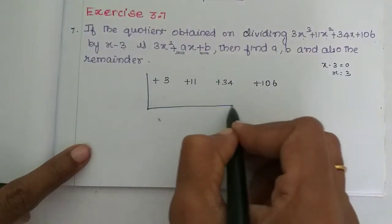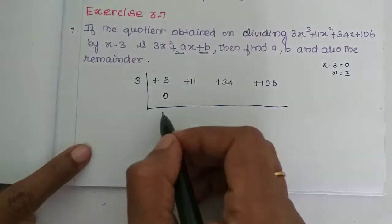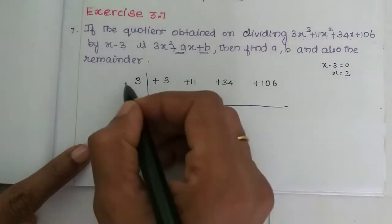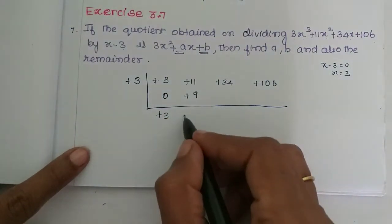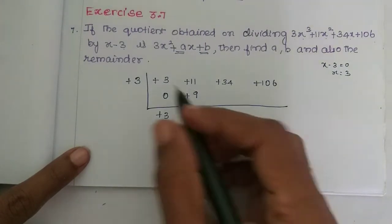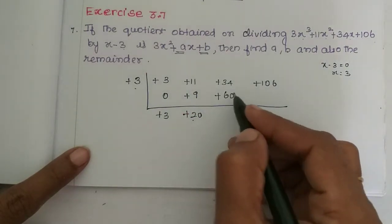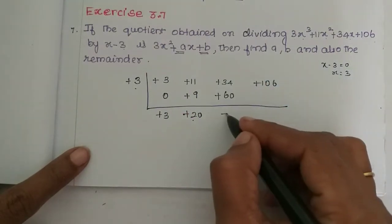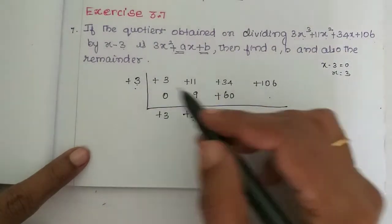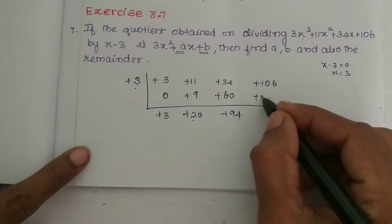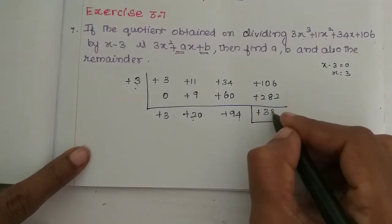Performing the synthetic division: bring down 3. Then 3 into 3 is 9. So 11 plus 9 equals 20. Then 3 into 20 is 60. So 60 plus 34 is 94. Then 3 into 94 is 282. So 282 plus 106 is 388.